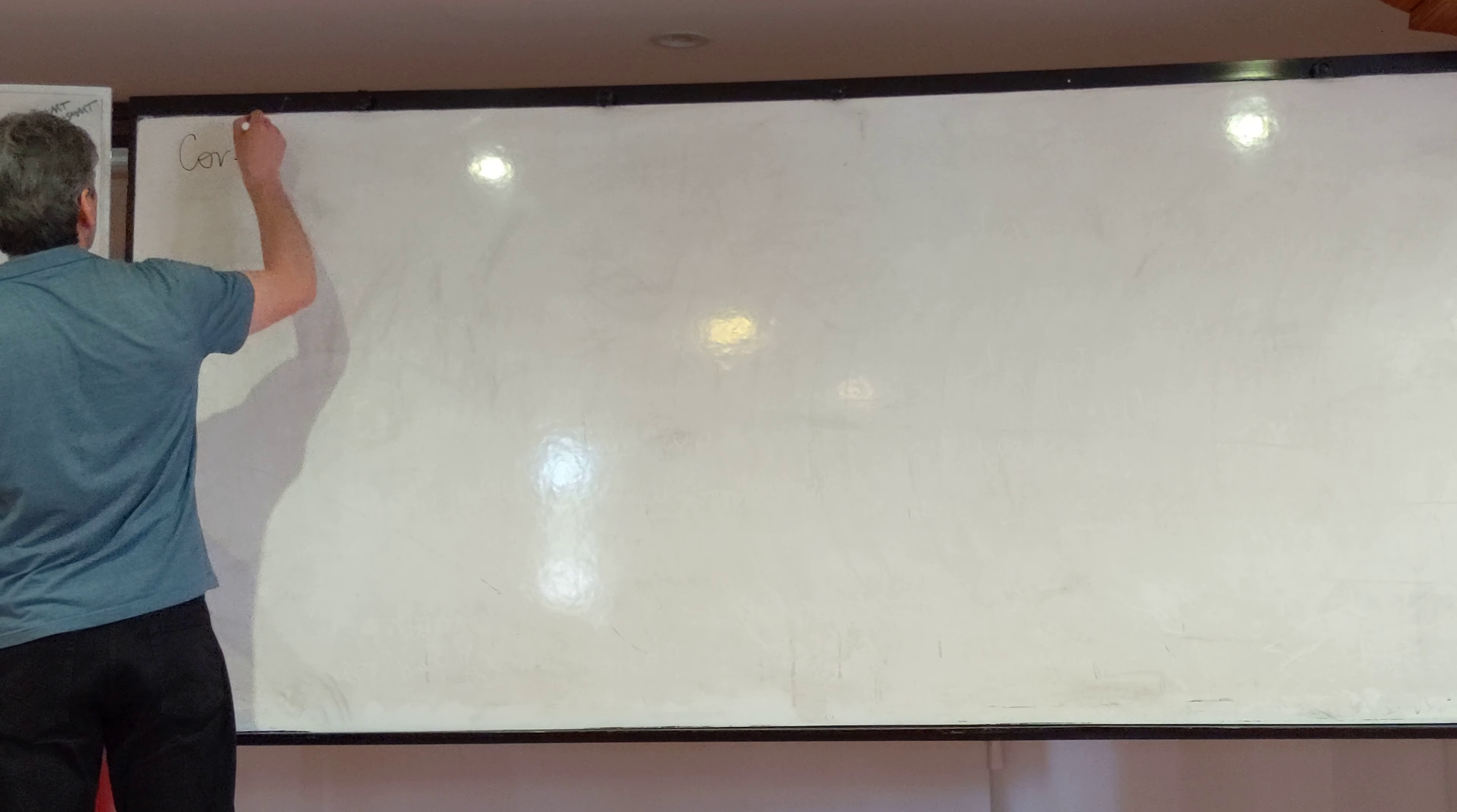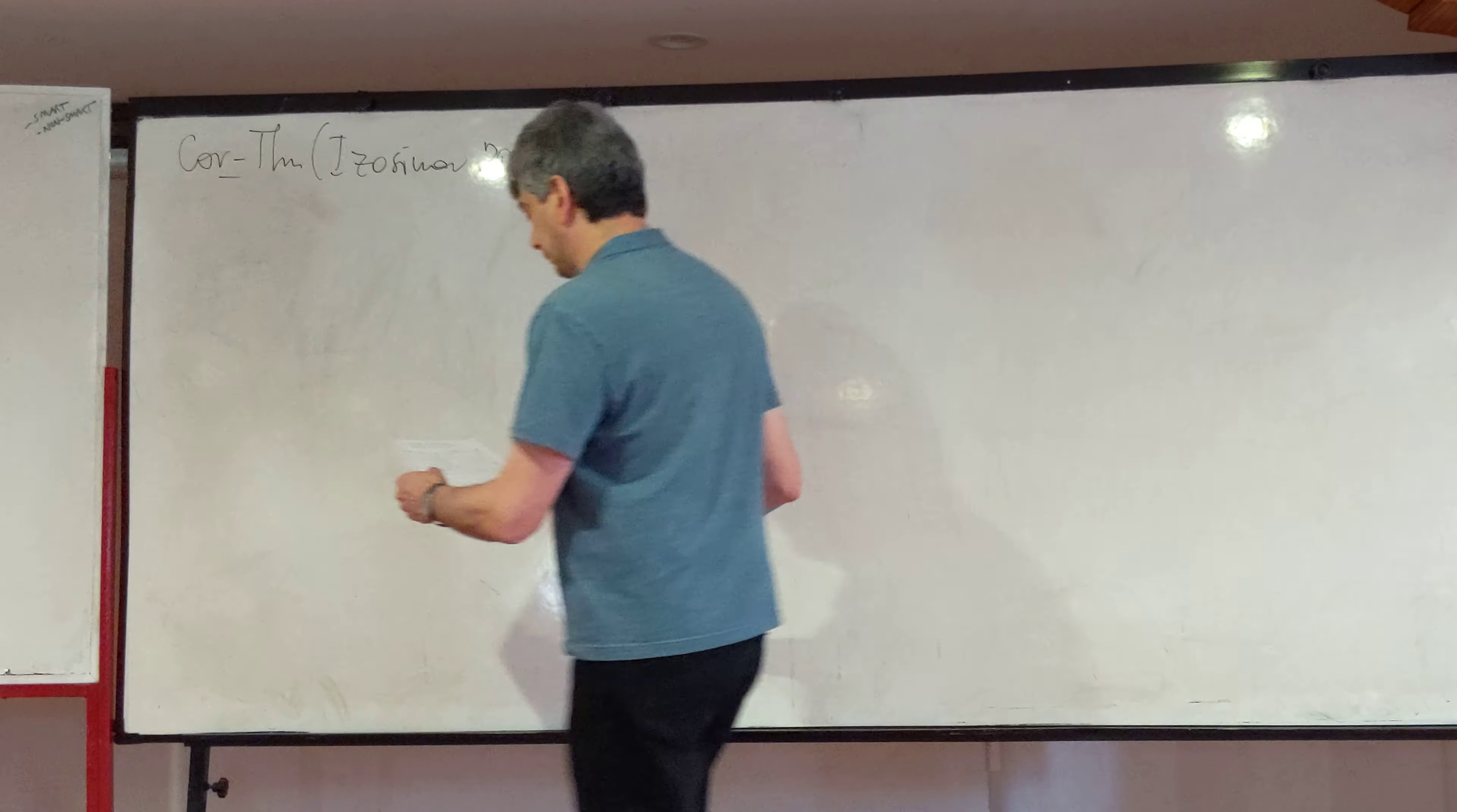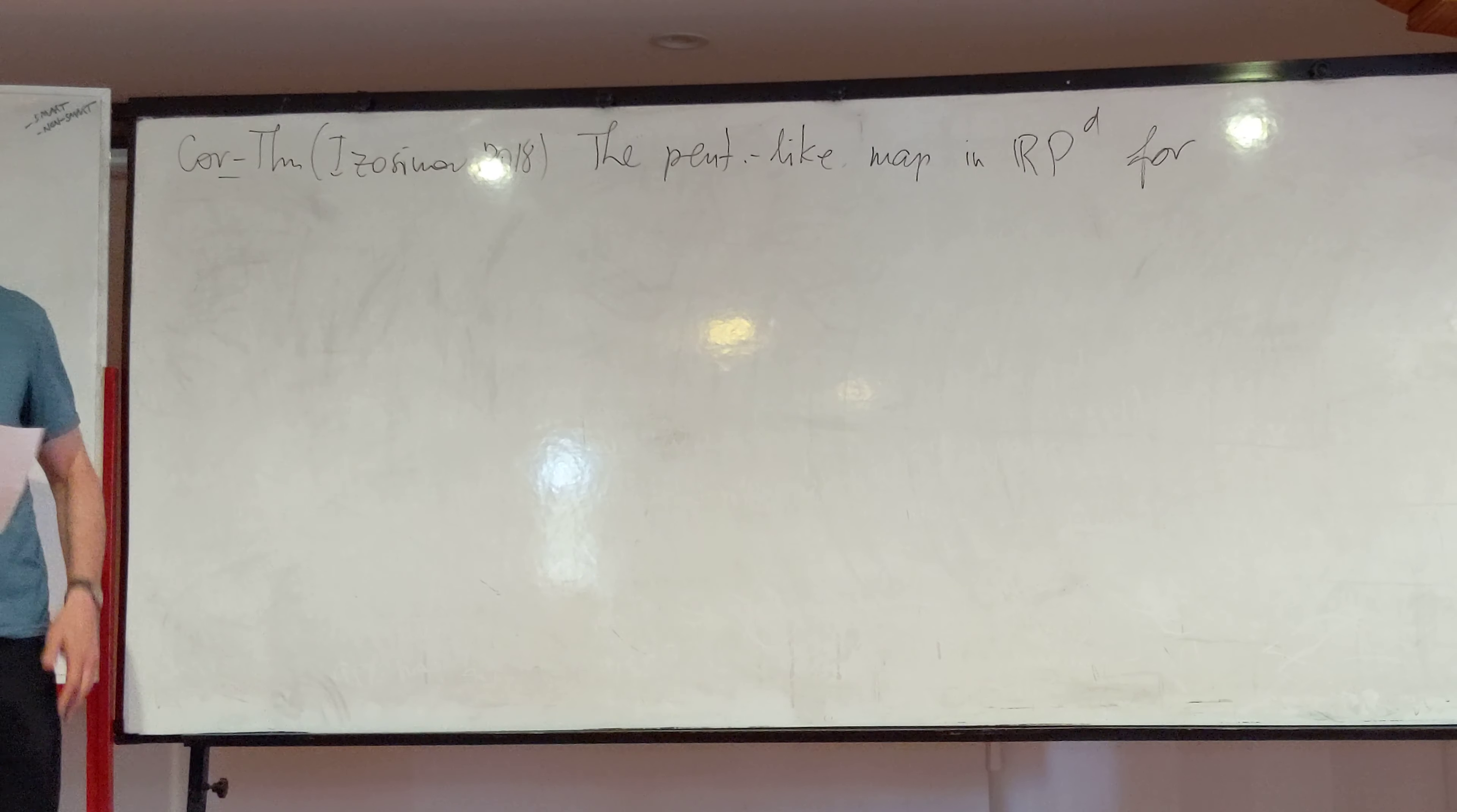So the theorem is that he defined a different type of pentagram-like maps, and it is as follows. So one can consider the pentagram-like map on polygons in the d-dimensional space associated with a pair of subsets of integers.